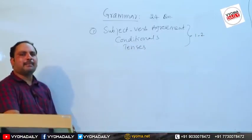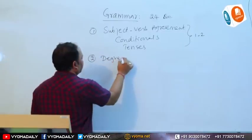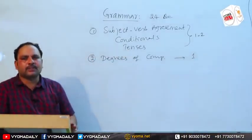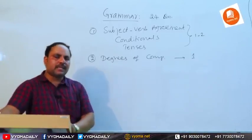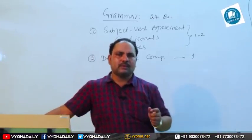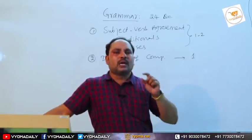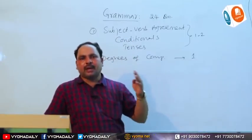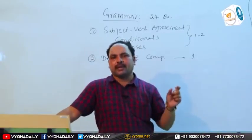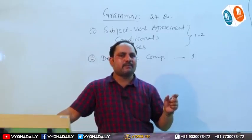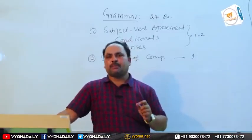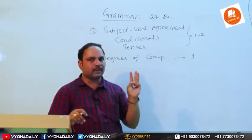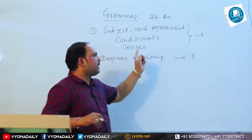The second key area in grammar is degrees of comparison. At least one question is asked from this topic in every previous question paper. We need to know what degrees of comparison are, the different forms of adjectives, the transformation of degrees into other degrees — for example, changing positive degree into comparative and superlative — and correct use of comparisons. If you are thorough with these four areas, you will get one mark in this topic.